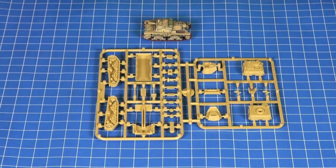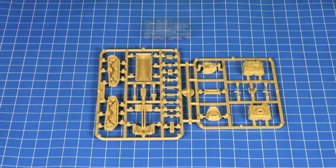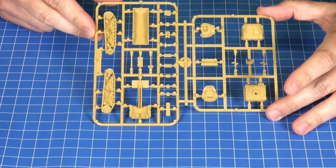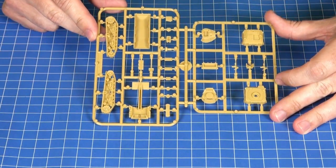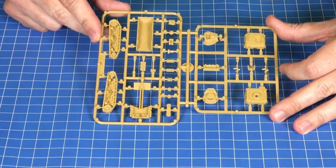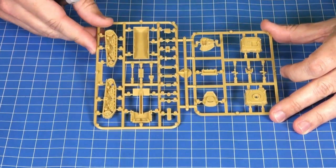Today we're going to be assembling the Italian Semivente assault gun as featured in the new book Avanti. As you can see there's quite a simple frame layout here. Over on the left hand side we've got the tracks and the hull. Over on the right hand side we've got the turret and casemate sections for the M14-41 and Semivente.